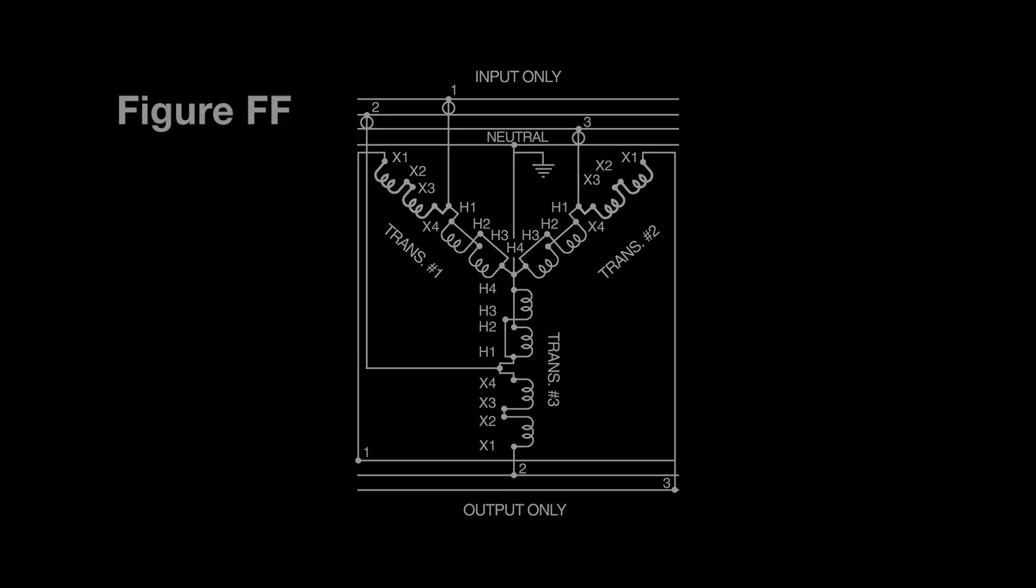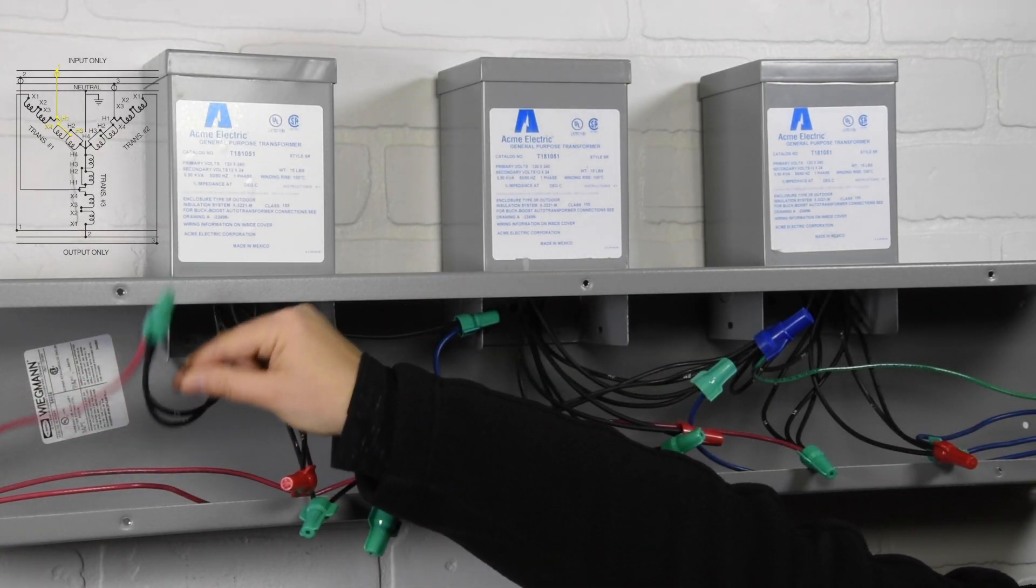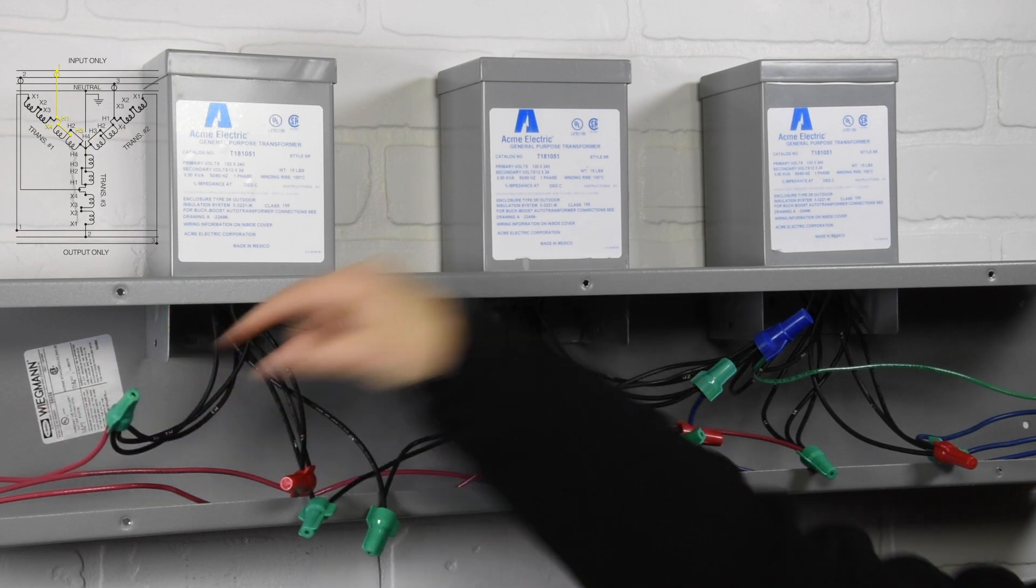This demonstration will follow figure FF in our Acme Electric Catalog. First connection: input 1 to transformer 1 wires H1 to X4 to H3.